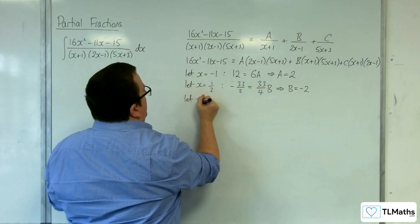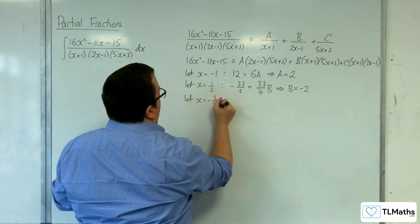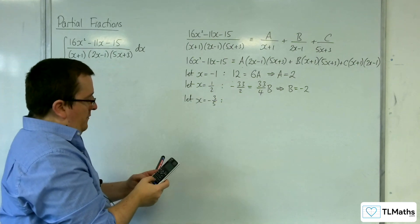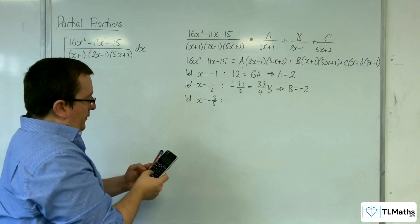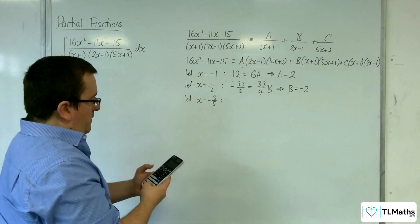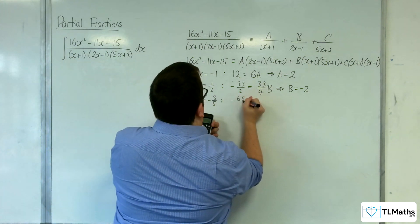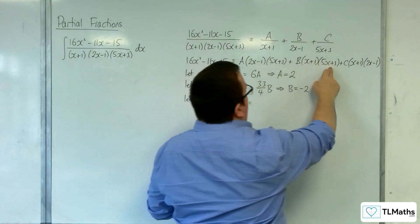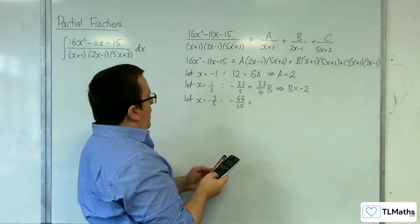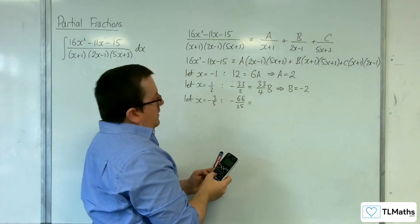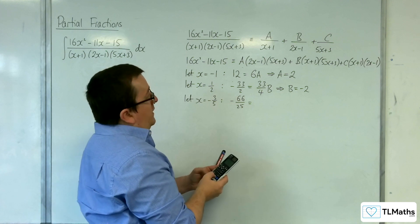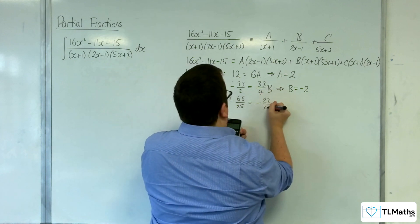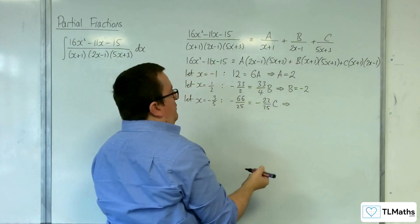Finally, let x equal minus 3 fifths. On the left-hand side, 16 lots of minus 3 fifths squared, take away 11 lots of minus 3 fifths, take away 15, and that's minus 66 over 25. On the right-hand side, it knocks out two brackets, so we have x plus 1: minus 3 fifths plus 1, times 2 lots of minus 3 fifths, take away 1. That gives minus 22 twenty-fifths times C, so C must equal 3.